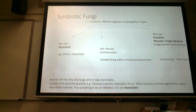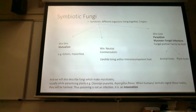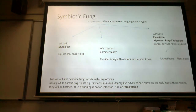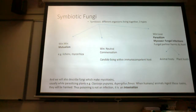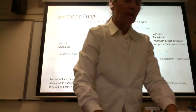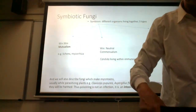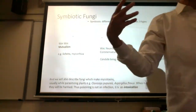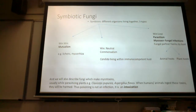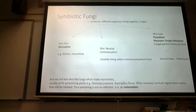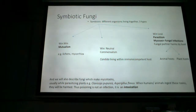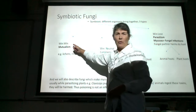Symbiosis is a general term for two or more different organisms living together. There are three types of symbiosis depending on what happens to the symbiotic partners — do they benefit, are they harmed? If both partners benefit from living together, it's called mutualism — we can call that win-win.